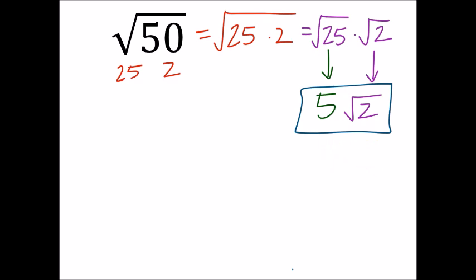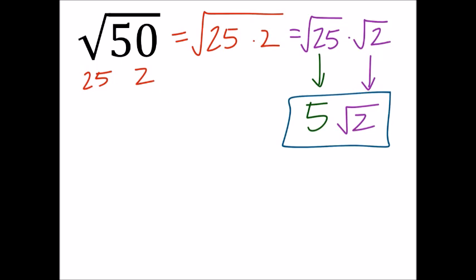For method one, you kind of have to know a lot of the perfect squares, and you got to know that there would be factors of these numbers. Like 50, 25 is a factor, which means that if I break this up into multiples, 25 times 2 would give me 50. But I have to know that 25 is a perfect square to figure that part out.